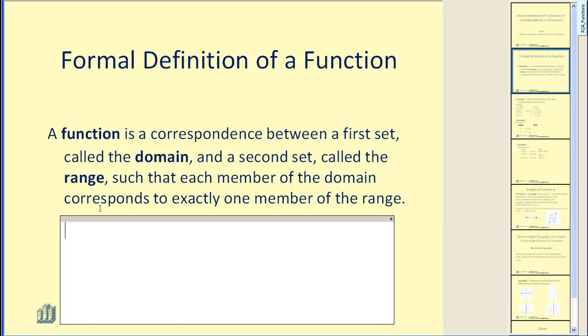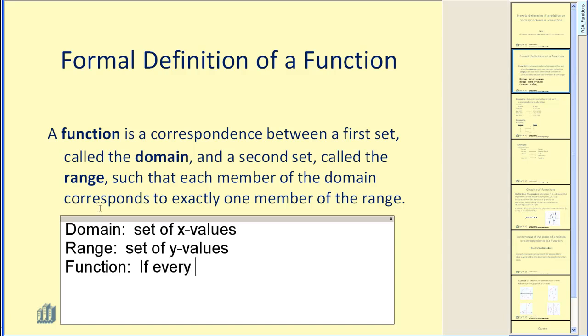I'd like to explain this in a little more detail. When you hear the word domain, you can basically think of, in most cases, the set of x values. And the range, you can think of, in most cases, as the set of y values. So if you have a set of x and y values, it would be a function if every x value is paired with exactly one y value. Every x value can only have one y value.